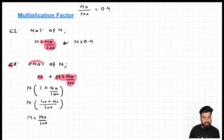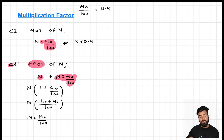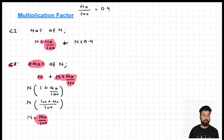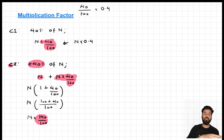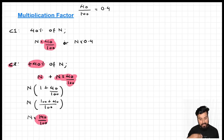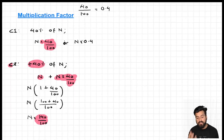So a direct way to increase a number by 40 percent is to multiply that number by 140 by 100. Instead of first calculating 40 percent and then adding it to the original value, a better approach is to directly multiply the number by 140 by 100 and get the same result.